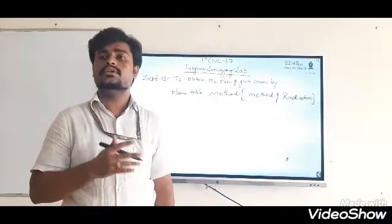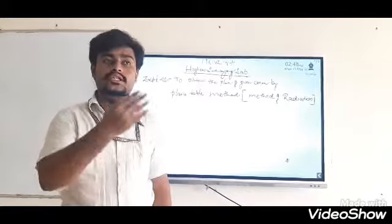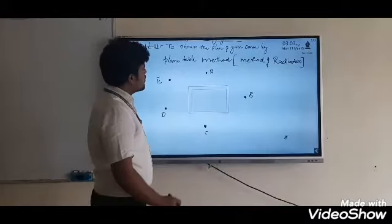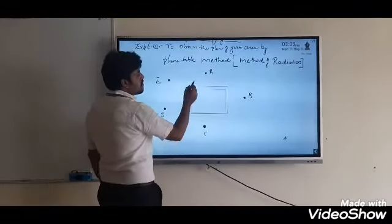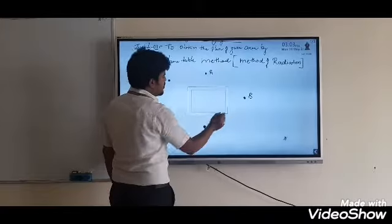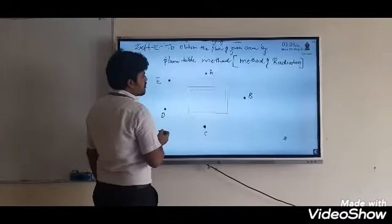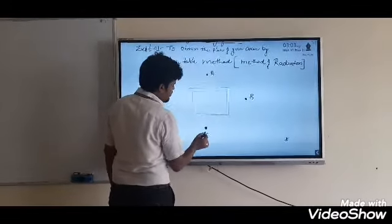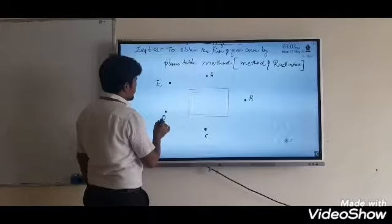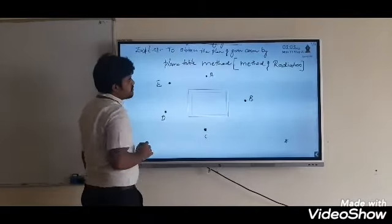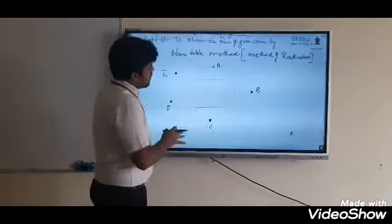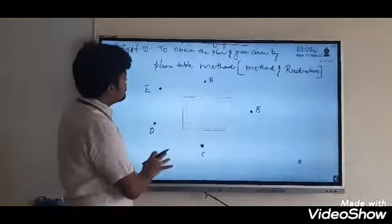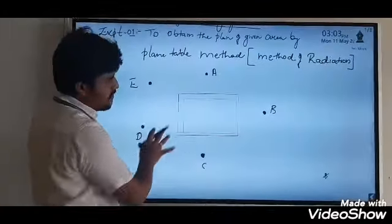You also require a few ranging rods to locate the stations. Let us assume a few points on the ground and name them A, B, C, D, and E. At an approximate center of these points, we will be setting the plane table.